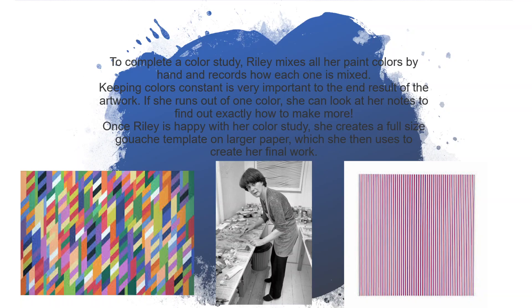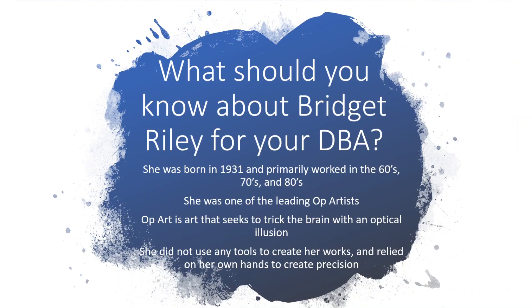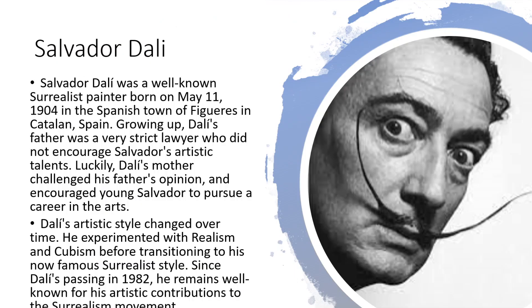Riley does all of this without using any measuring tools whatsoever — everything by hand. She is what we call a process painter. She does large gouache paintings and then transfers those onto surfaces where she goes over them with acrylic paint, and then takes oil paint over the acrylic — this layering of one medium over the other, all done without any fancy measuring tools. You should know she worked in the 60s, 70s, and 80s, was one of the leading Op artists, and that Op art seeks to trick the brain through optical illusion. She didn't use any tools to create her work.